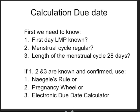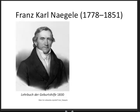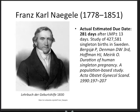Franz Karl Naegele was a German obstetrician who published in 1830 in his 'Lehrbuch der Geburtshilfe' — the textbook of obstetrics — and calculated that the average duration of pregnancy was 280 days. Interestingly, a 1990 study in Sweden including 427,000 singleton births confirmed the average estimated due date to be 281 days. It's amazing that Naegele in 1813 came up with 280 days without any ultrasound at his disposal.